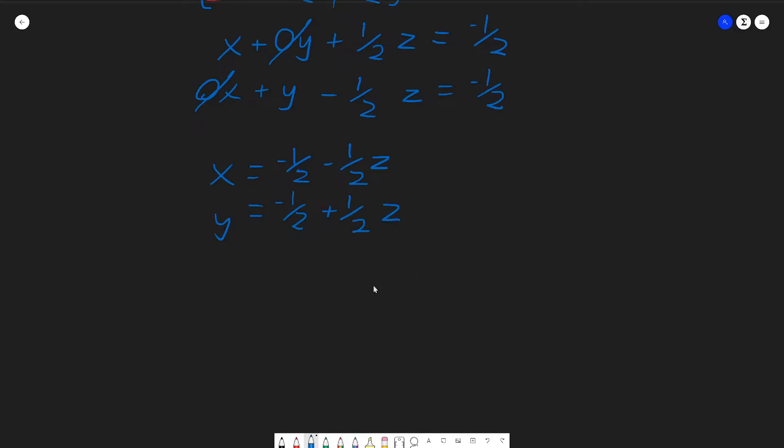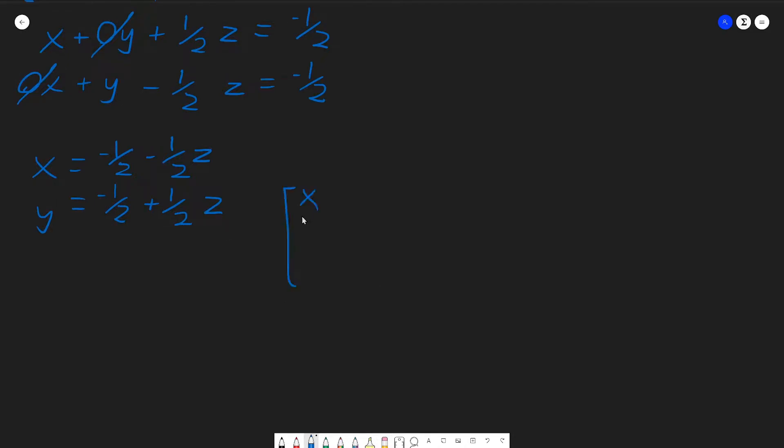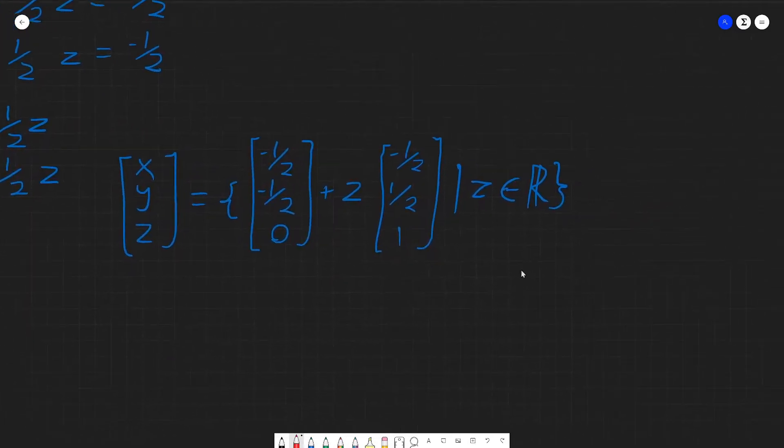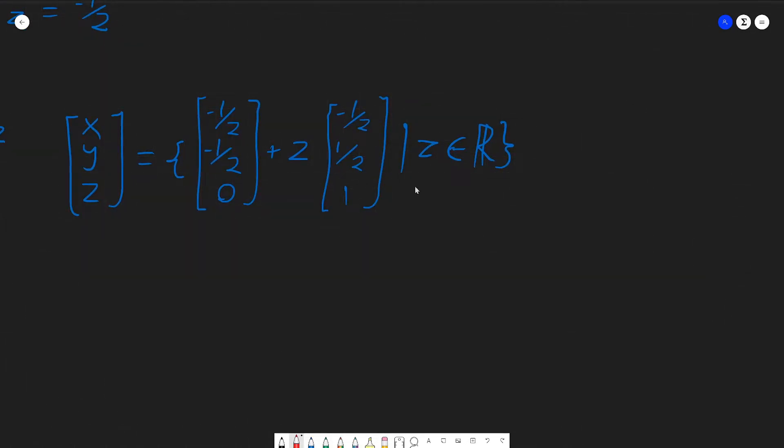If I wanted to describe the solution set here, I would say that my solution set, the vector x, y, and z, is described by these possible values. It's the set of the following vectors. One thing might be standing out to you here, you might be wondering what this at the end means. This means that z is a real number. It is an element of the set of real numbers. We're expressing each of these variables in terms of z. The reason why I have a vector of constants and a vector that is multiplied by z is because each variable is equal to a certain constant plus a certain amount of z, and I can express that with vectors where each row corresponds to an equation for each of the variables x, y, or z.